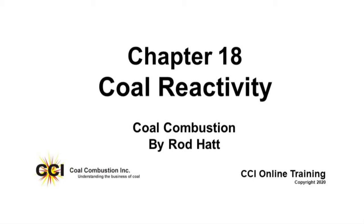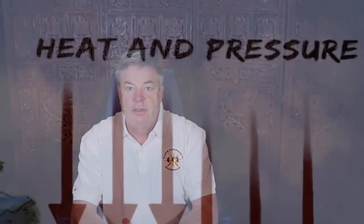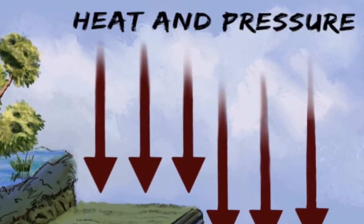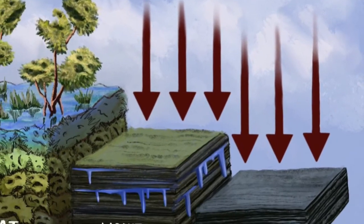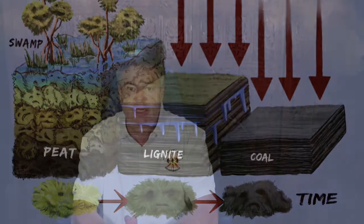Welcome to a chapter about coal reactivity. I wanted to get this in before we got too far along with the combustion process, because different coals have different ability to light on fire and burn, and it correlates quite well with rank. So as we look at the chemistry of coals or different measurements of reactivity, we're going to see that a lot of those same measurements are indicating the rank of a coal.